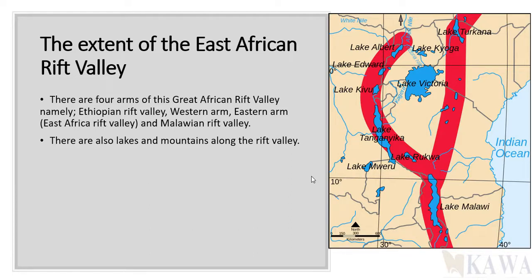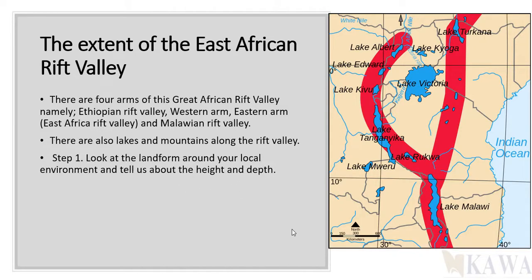There are also lakes and mountains found on the floor and on the sides of the rift valley. There are many lakes — some are even too small to be known in geographic books — but you need to know the major ones and name them. You also need to know the mountains. The mountains are called block mountains.